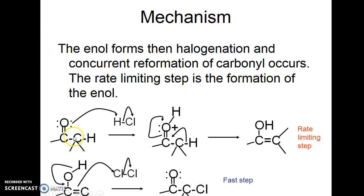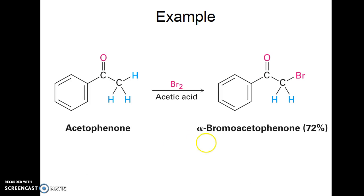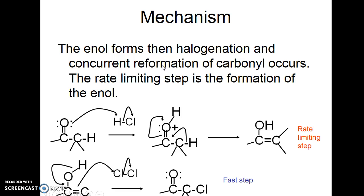Looking at the detailed mechanism: the hydrochloric acid protonates the carbonyl, and the carbonyl then forms the enol. Formation of the enol is the rate-limiting step. Once the enol forms, there is rapid addition of the chlorine across the double bond. As soon as the pi bond attacks the chlorine, deprotonation occurs on the oxygen.